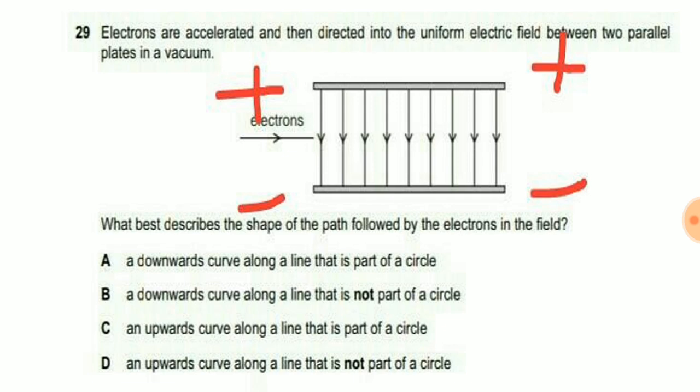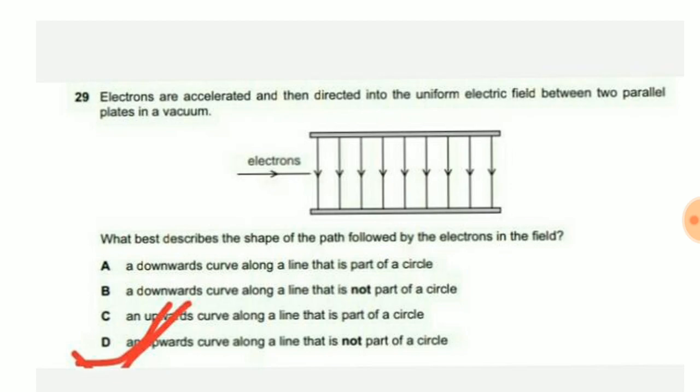Because electrons are attracted towards the positive plate, and in option choice C it is said that it's part of a circle. The motion of electrons in the electric field is not part of a circle, so our option choice D is the correct answer for this question.